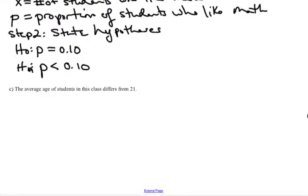Let's do one more example of this. This time it's the average age of students in this class differs from 21. So again I look for words. In this case I see the word average. So that tells me I'm dealing with mean again. So again your first step is to state the random variable and parameter.